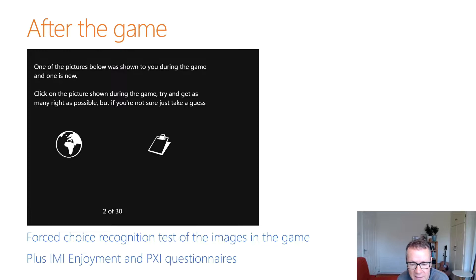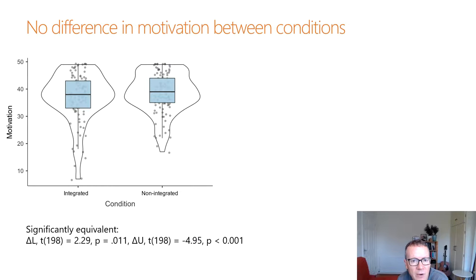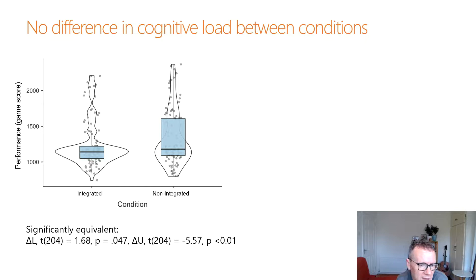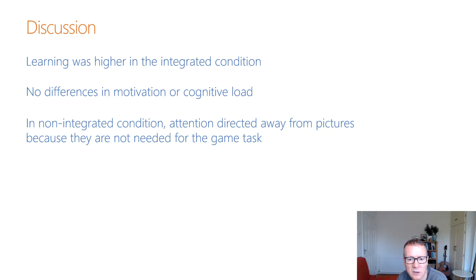Many more images were recognized in the integrated game than the non-integrated game, so learning was much higher with a large effect size. However, there was no difference in motivation between conditions on the motivation questionnaire. Using game performance as a proxy for cognitive load, there was also pretty much no difference in cognitive load between conditions. So learning was higher in the integrated condition with no difference in motivation or cognitive load, and in the non-integrated condition attention was directed away from the pictures because they weren't needed for the game task, while in the integrated condition learning increased via an attentional mechanism.